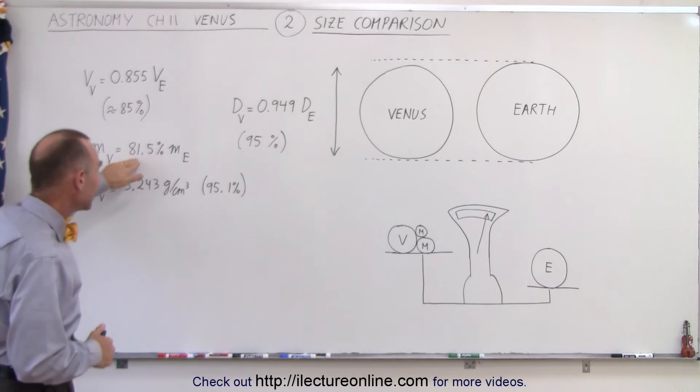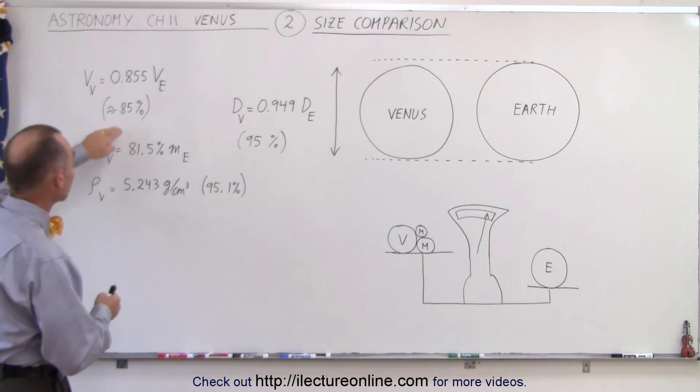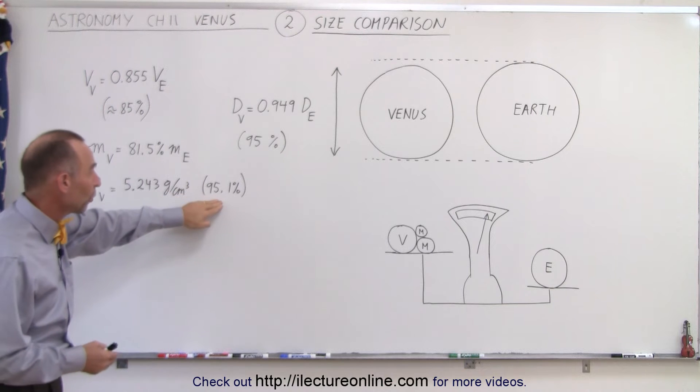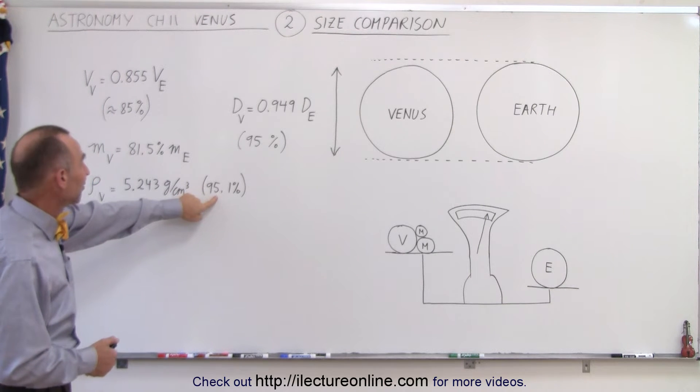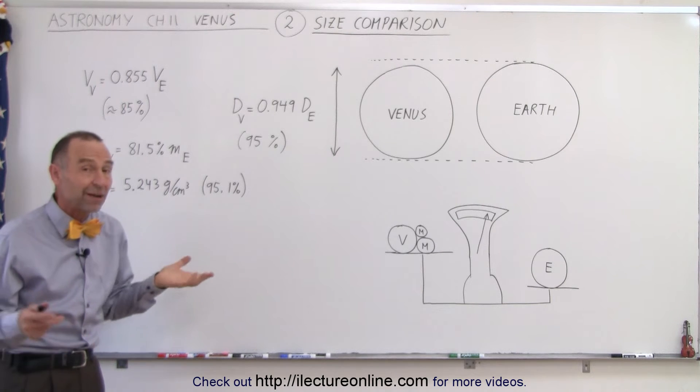Mass-wise, about 81.5 percent the mass of the Earth. That is because not only is the volume 85 percent, the density is somewhat smaller as well. So when we multiply 95 percent times 85 percent we roughly get about 81.5 percent.